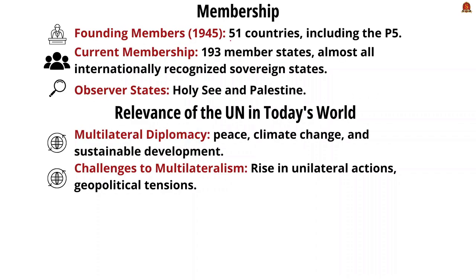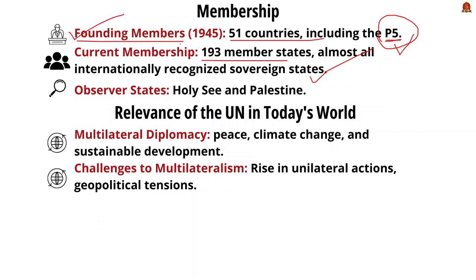Regarding membership, there were 51 founding member countries, including the P5 members. India was also a founding member of the United Nations. The current membership stands at 193 member states, including almost all internationally recognized sovereign states. The P5 countries are the US, France, Soviet Union (Russia), China, and the United Kingdom. Other countries like Brazil, Egypt, Canada, and India also joined as founding members. The Holy See (Vatican City) and Palestine remain as observer states.